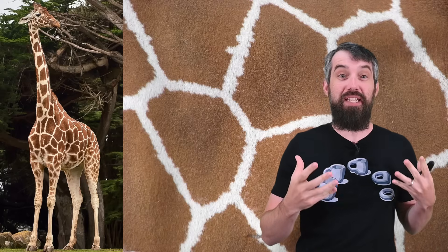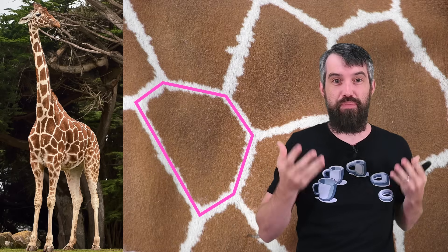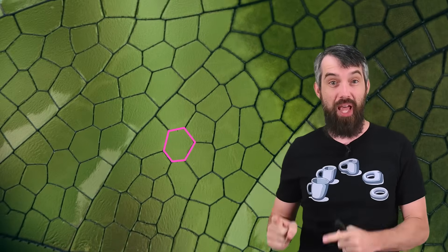Its cells consist of polygons whose boundaries are just comprised of straight lines. This is a dragonfly wing. Again, it consists of all of these polygons with straight lines.